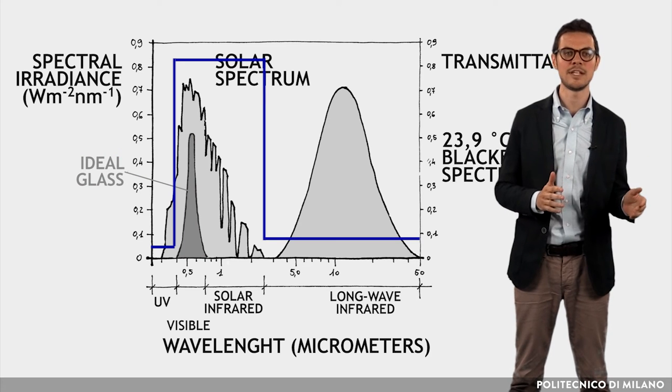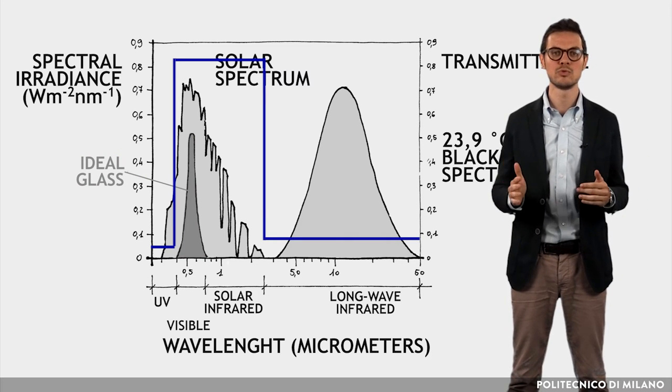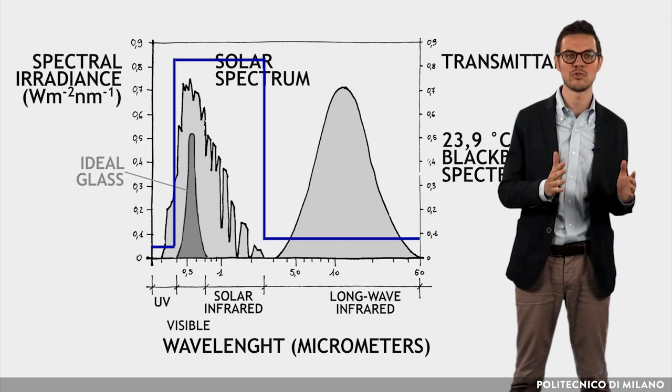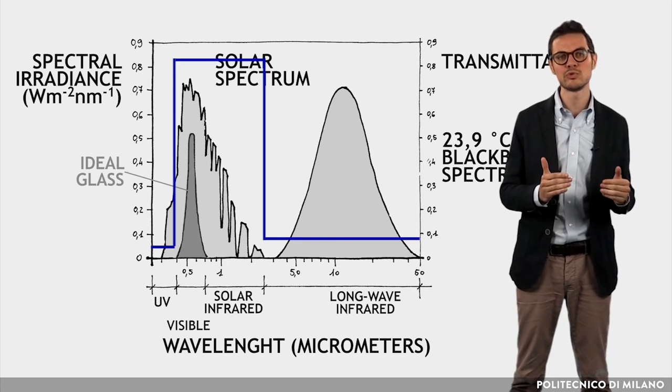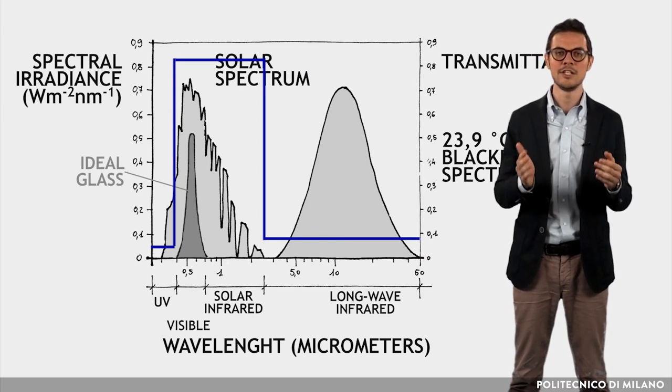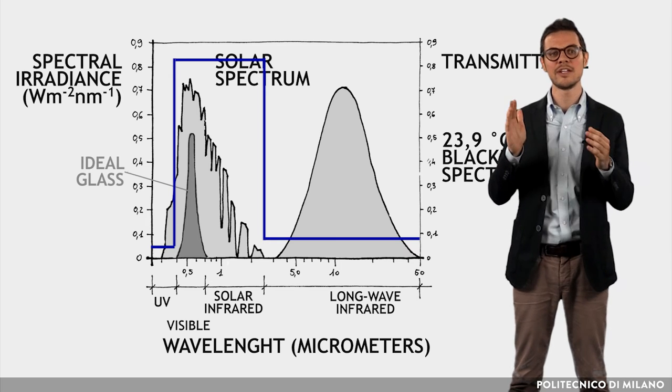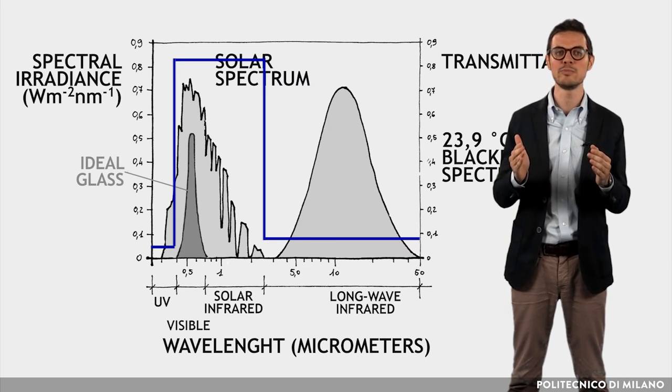In the cold season, the ideal glass should also be able to transmit the near infrared fraction of solar radiation indoors to contribute to space heating, and it should be able to block the far infrared radiation emitted by the heated room.